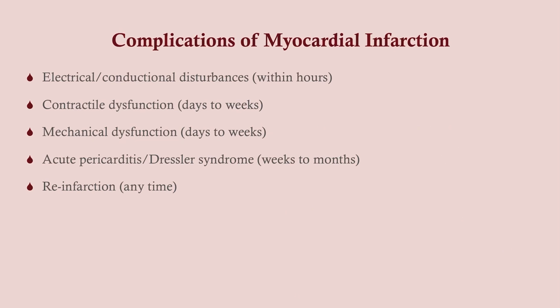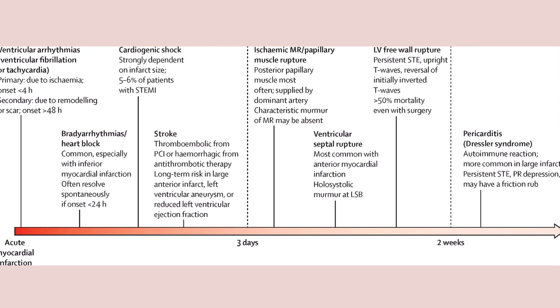These are the complications of an MI, organized roughly in order of when they happen. First are the electrical or conduction disturbances — we can just call these arrhythmias. Then contractile dysfunction, which is the heart's ability to pump. Then mechanical dysfunction, things that can go wrong to the structure of the heart. Then acute pericarditis or Dressler syndrome, which tends to happen weeks after an MI. Arrhythmias are most severe early on, within the first hours to a couple of days.